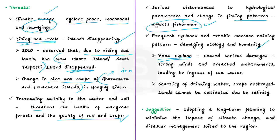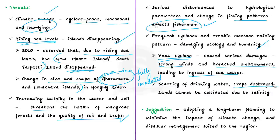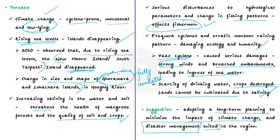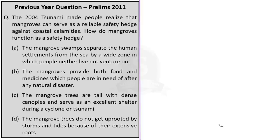Cyclones cause strong winds and breached embankments, which lead to ingress of seawater. This causes large areas to flood. Due to Yas cyclone, the Goromara Island was fully inundated, leading to scarcity of drinking water in many islands because water resources were inundated by seawater. This inundation not only destroys crops but also the land, because land cannot be cultivated due to increased salinity. The news article suggests adopting long-term planning with strategies to minimize the impact of climate change and to formulate disaster management suited to the region.